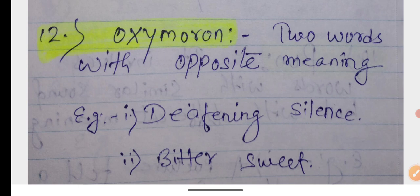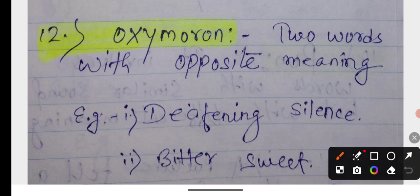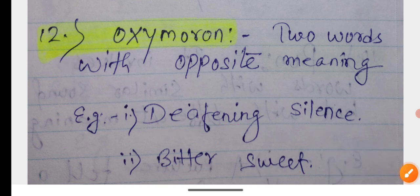Oxymoron. Two words with opposite meanings. Examples: deafening silence, bittersweet. This type of words, where opposites are combined, is called oxymoron.